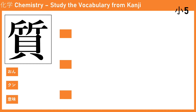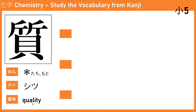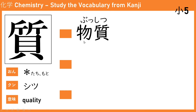The next kanji is 質 (shitsu). The onyomi is marked as difficult and not commonly used in Japanese. The kunyomi is tachi or moto. The meaning is quality. We have seen before 物質 (bu-shitsu), which means matter.